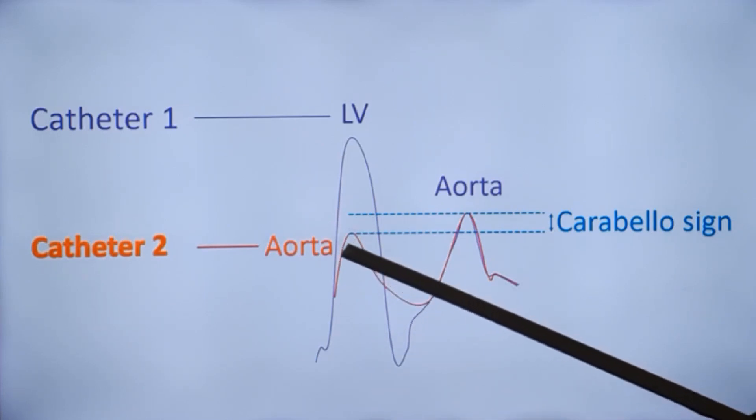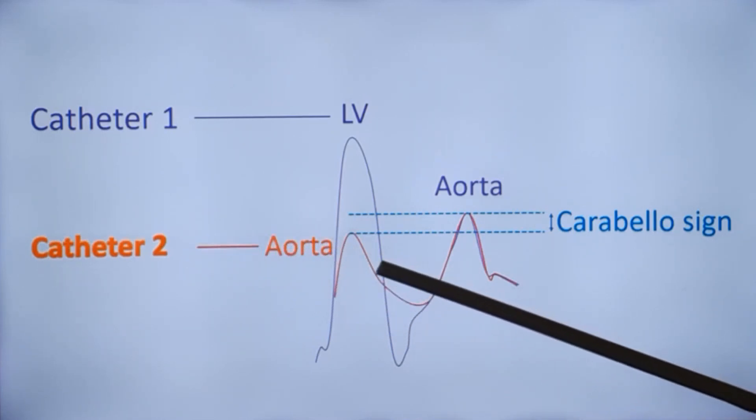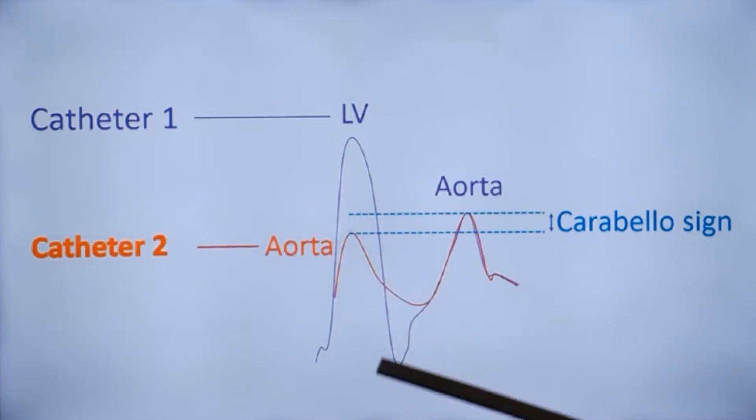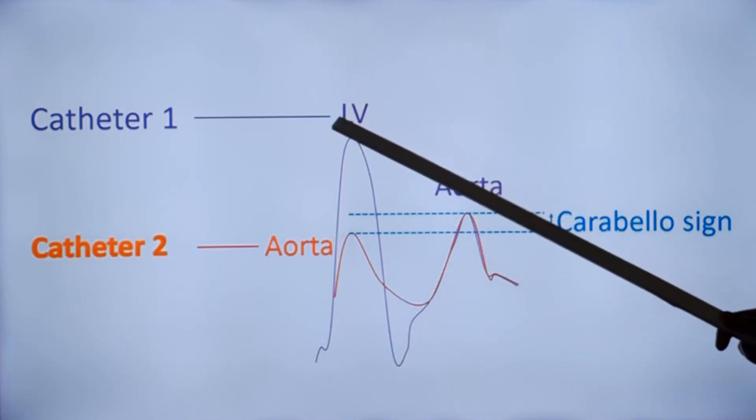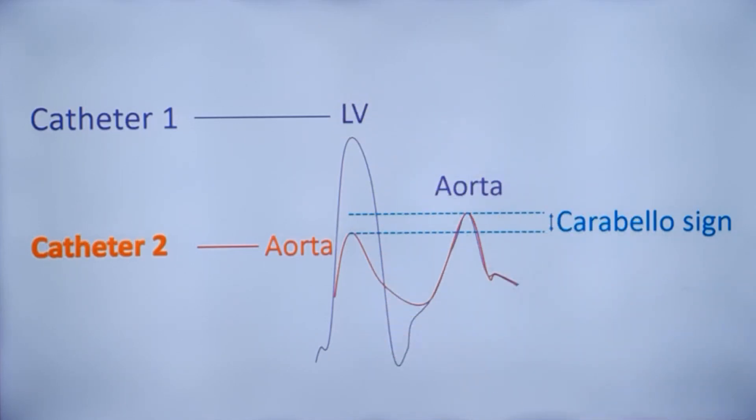This is the second catheter, the femoral artery or aortic catheter, which shows a lower pressure when the LV catheter is inside the left ventricle. When it is pulled out, there is a rise in pressure in the catheter. That is known as Carabello sign.